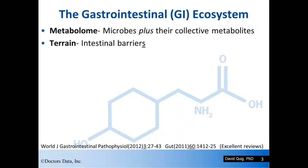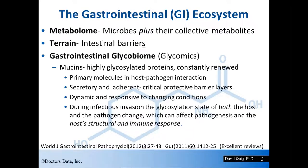When we talk about the gastrointestinal ecosystem, we consider the three primary components: the metabolome — that is the microbes plus their collective metabolites — the terrain, the intestinal barriers, and very importantly, the gastrointestinal glycobiome. That is the study of the glycosylation and glycation of proteins and various components within the GI microbiome. Of pivotal importance in the gastrointestinal glycobiome are the mucins, which are highly glycosylated proteins that are constantly renewed. They are the primary molecules involved in host-pathogen interaction.